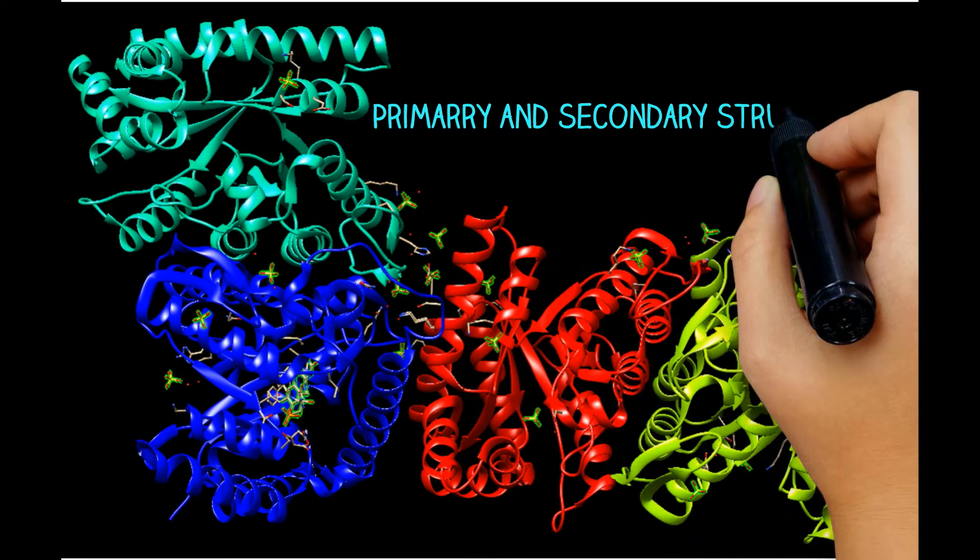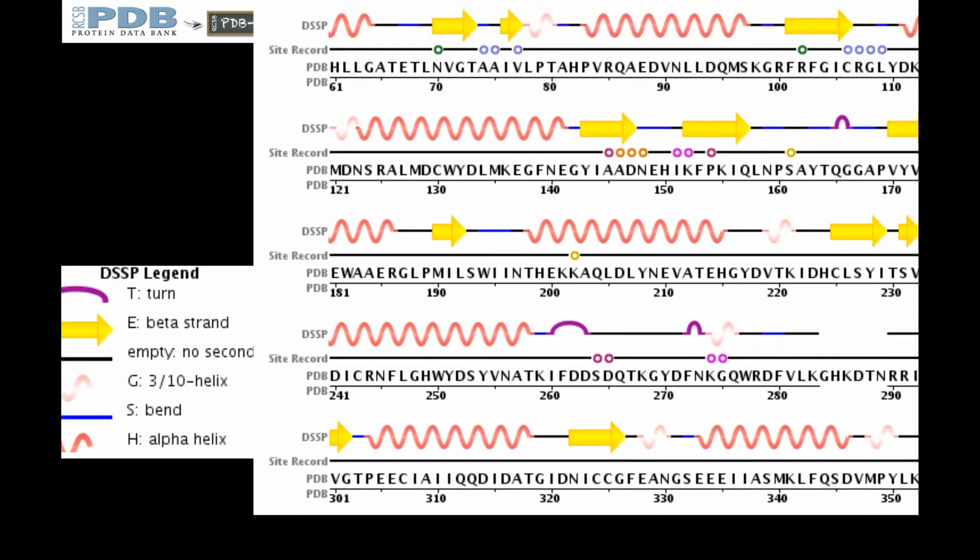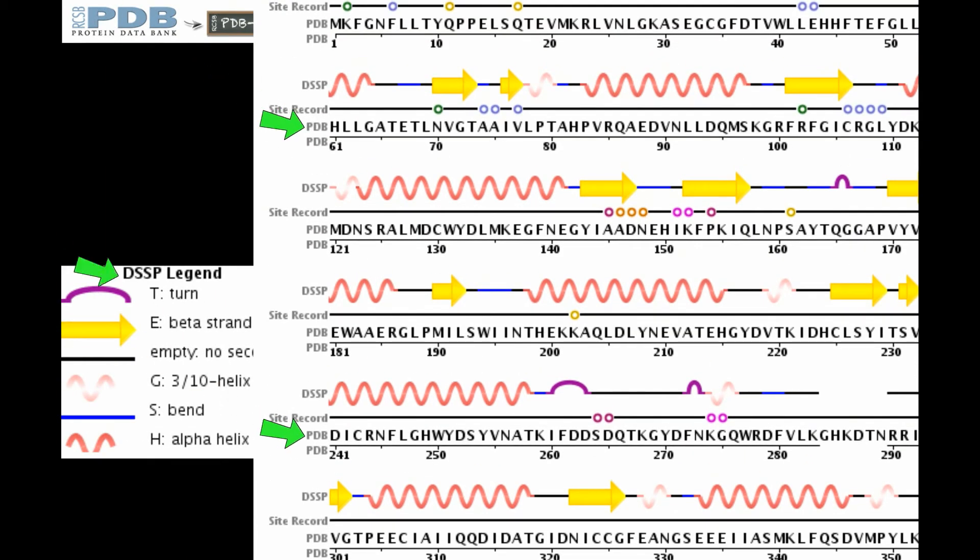What primary and secondary structure is responsible for the final quaternary protein architecture that we know as bacterial luciferase? With a protein database, we are able to see the primary structure in one-letter code alongside the secondary structures of the subunits.